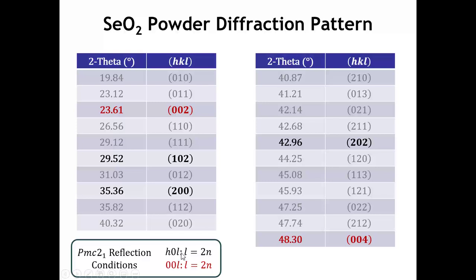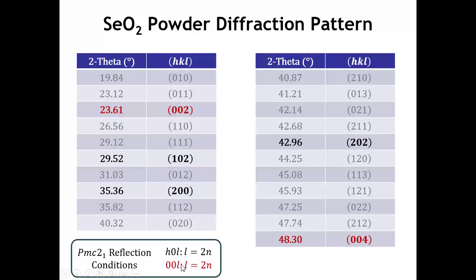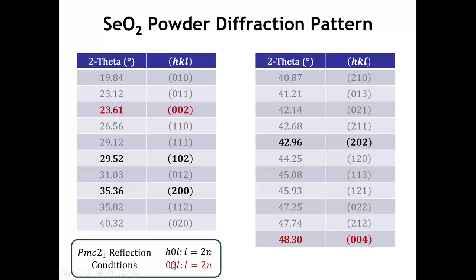For the H0L peaks — those with K equal to zero — we have a 102 peak, a 200 peak, and a 202 peak. And for the 00L reflections, we have a 002 and a 004. If you look at it, you can see the reflection conditions are obeyed. It's easy to see for the 00L peaks that we see only ones where L is an even number, the 2 and the 4. For the H0L peaks, also the L parameter — the third index — is always even.